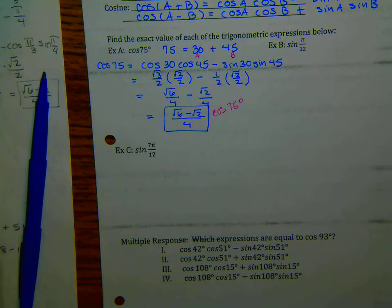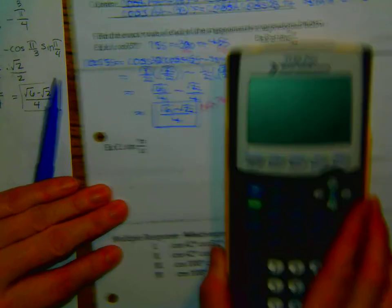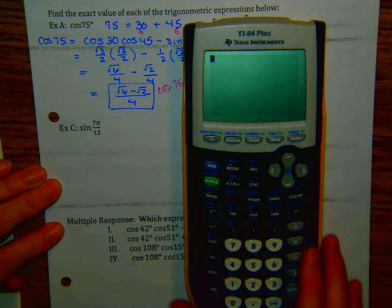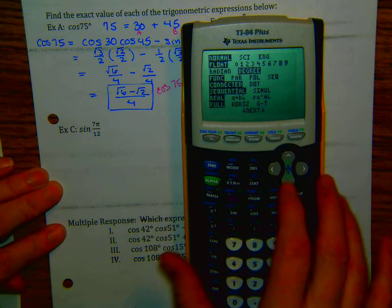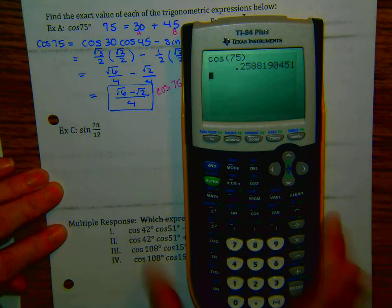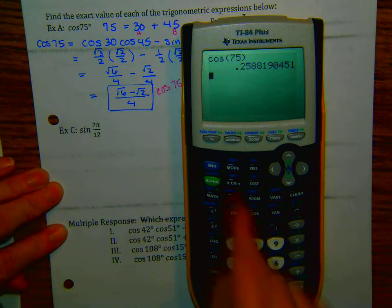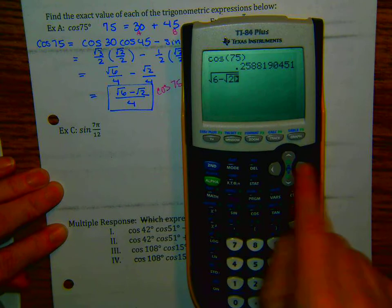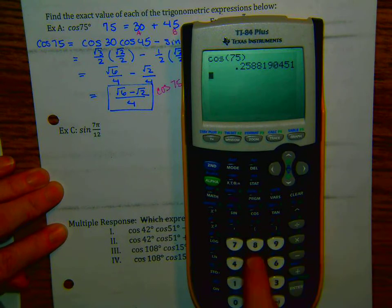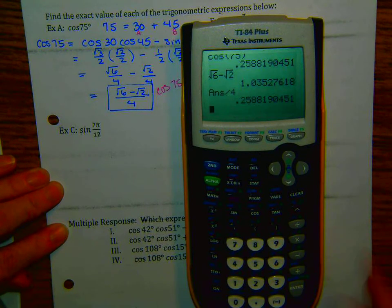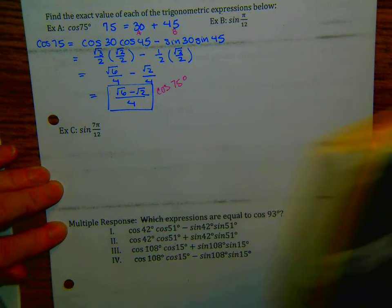Just this one time I'm going to show you on the calculator that this is, in fact, true. We want to make sure we're in degrees. The cosine of 75 equals 0.2588. Now we do this calculation: (√6 − √2) divided by 4, and we get the same answer. That checks out, so you know this process works.